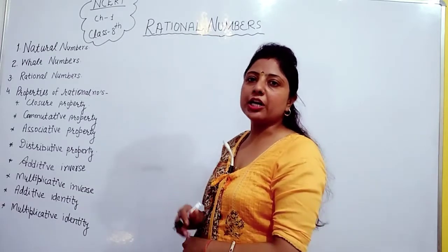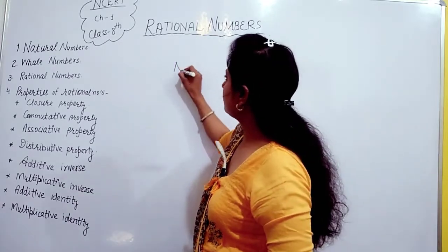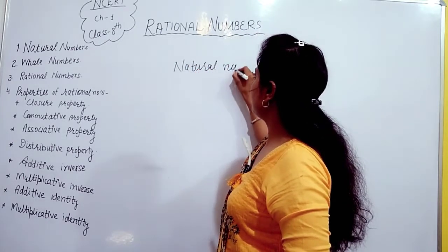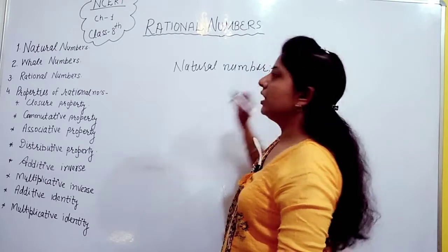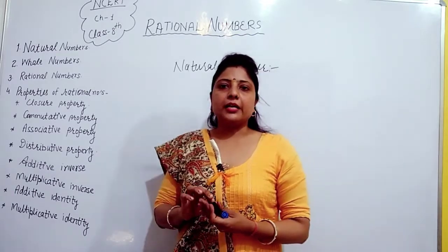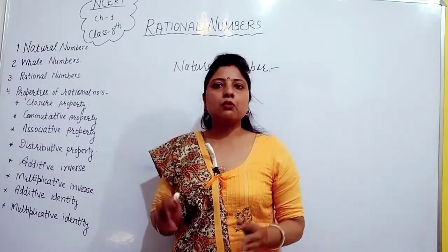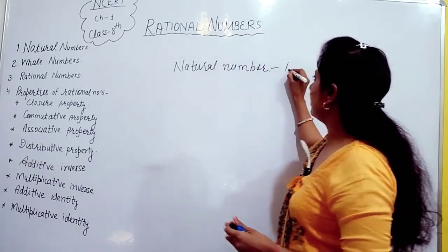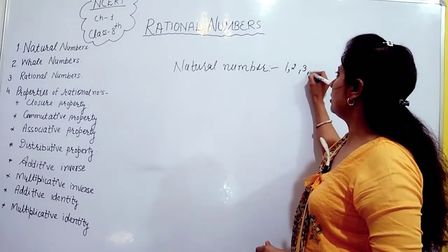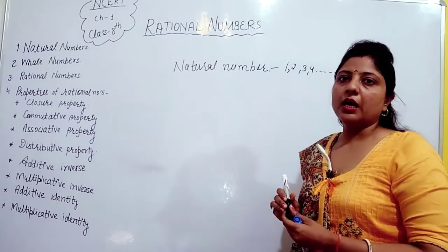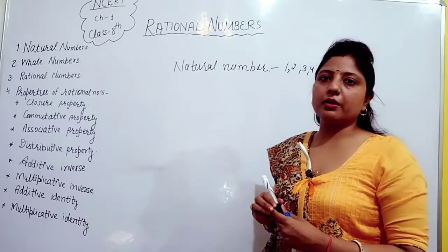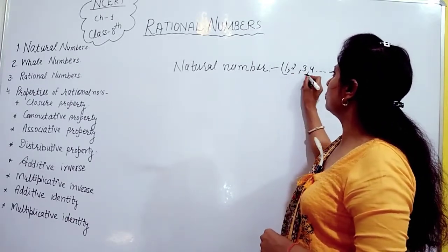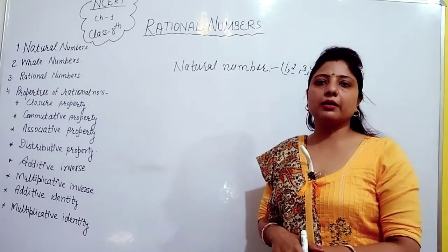First we will study about what are Natural Numbers. Natural numbers are the counting numbers that start from 1. Natural numbers are 1, 2, 3, 4 and so on.